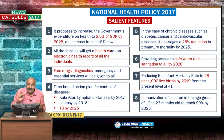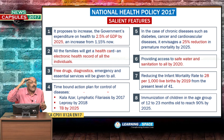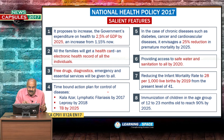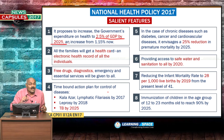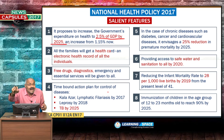Salient features. The first one: there is a need for increasing public expenditure. The government says it will be increased to 2.5% of GDP by 2025. To achieve that, the health budget must be increased by 20 to 25% every year from now onwards right up to 2025.